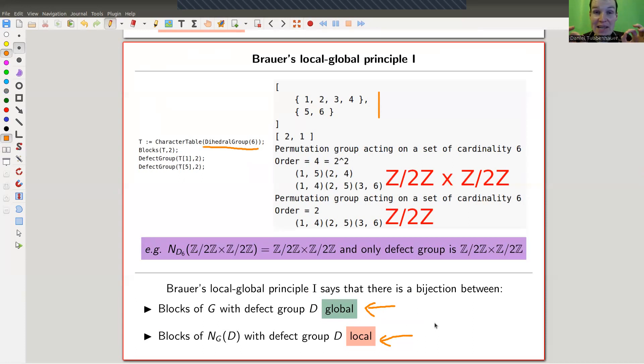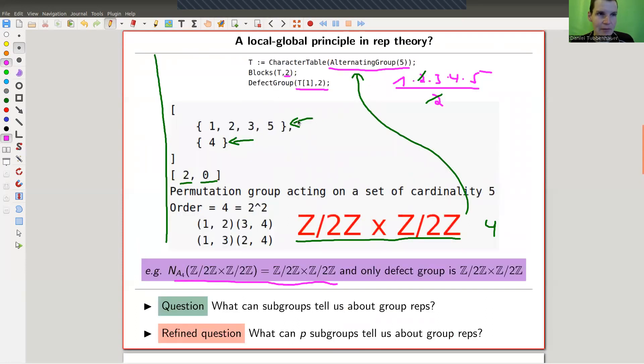In other words, Brouwer's local-global principle is a bijection between a global datum and a local datum as follows. The blocks of G with defect group D is what I'm computing here. I have a block of G, which is the dihedral group in this case, and it has a defect group. There's one-to-one correspondence between the blocks of the P group with the same defect group. In general there's a normalizer involved. In this case the normalizer is boring. You look at the corresponding P subgroup and look at its defect, and its defect will determine the original defect. The global information, the defects of G itself, are encoded by local information, by defects of P subgroups, or strictly speaking, of normalizers of P subgroups.